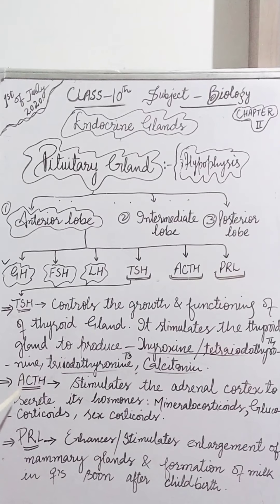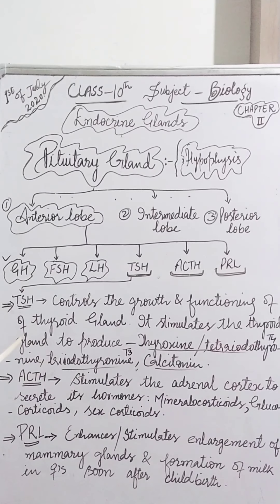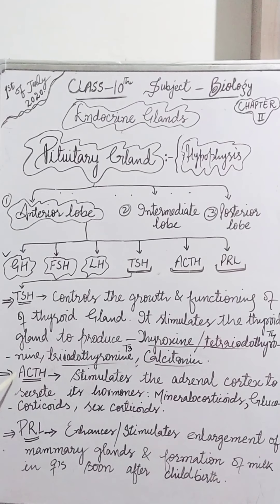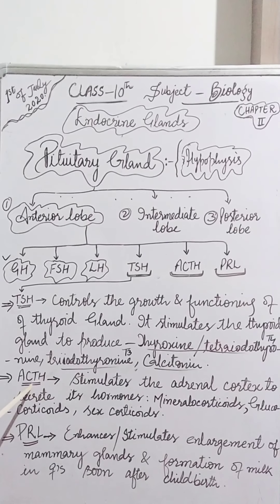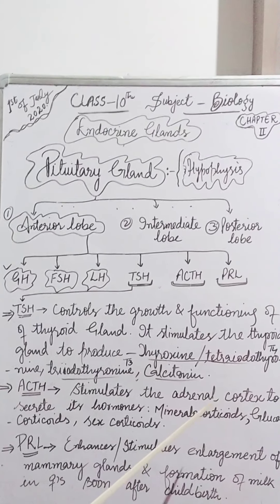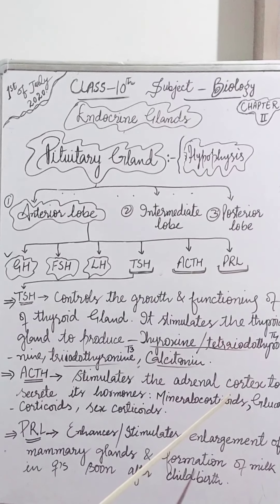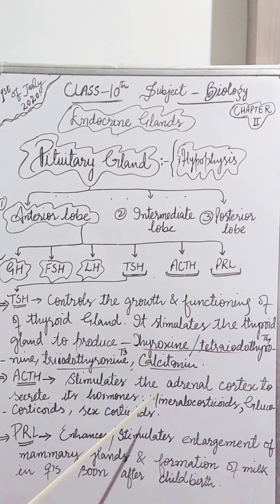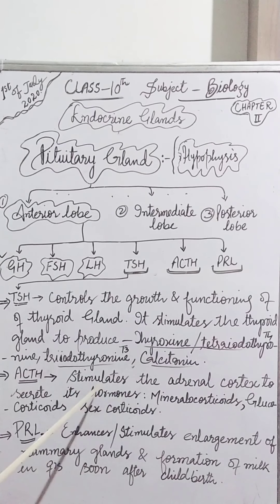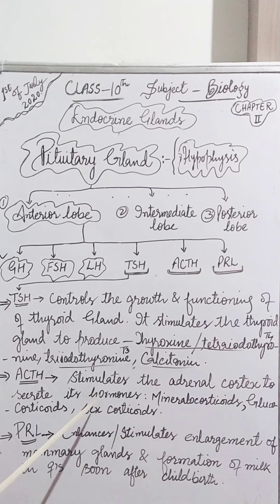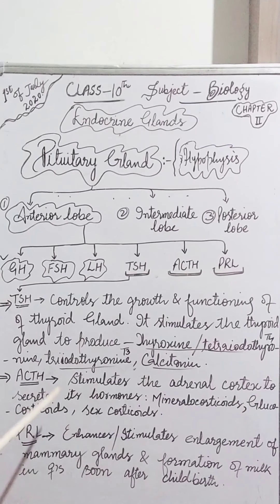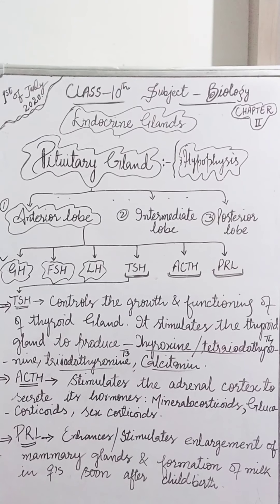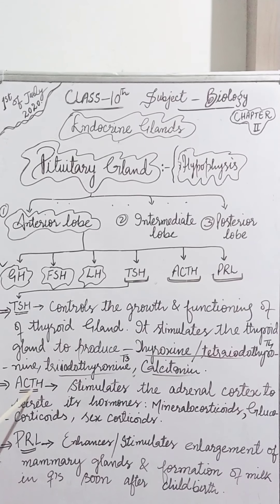The next hormone is adrenocorticotropic hormone, also called ACTH. This hormone stimulates the adrenal cortex to secrete its hormones. The adrenal gland is located on the kidneys — there is a pair of adrenal glands located on the pair of kidneys, which we will discuss in detail later.